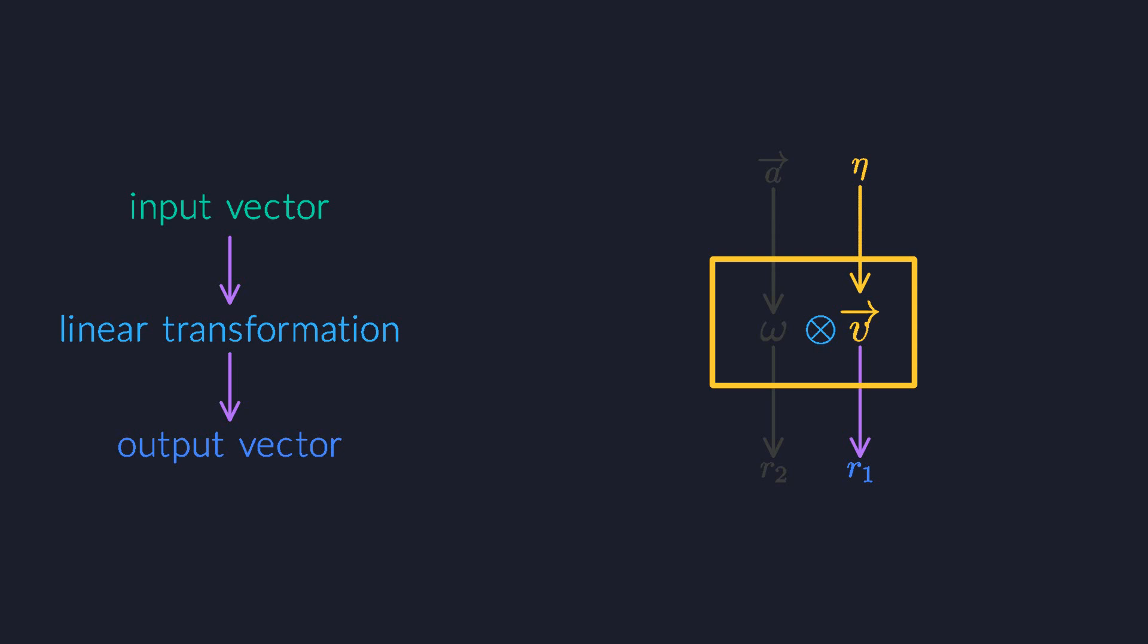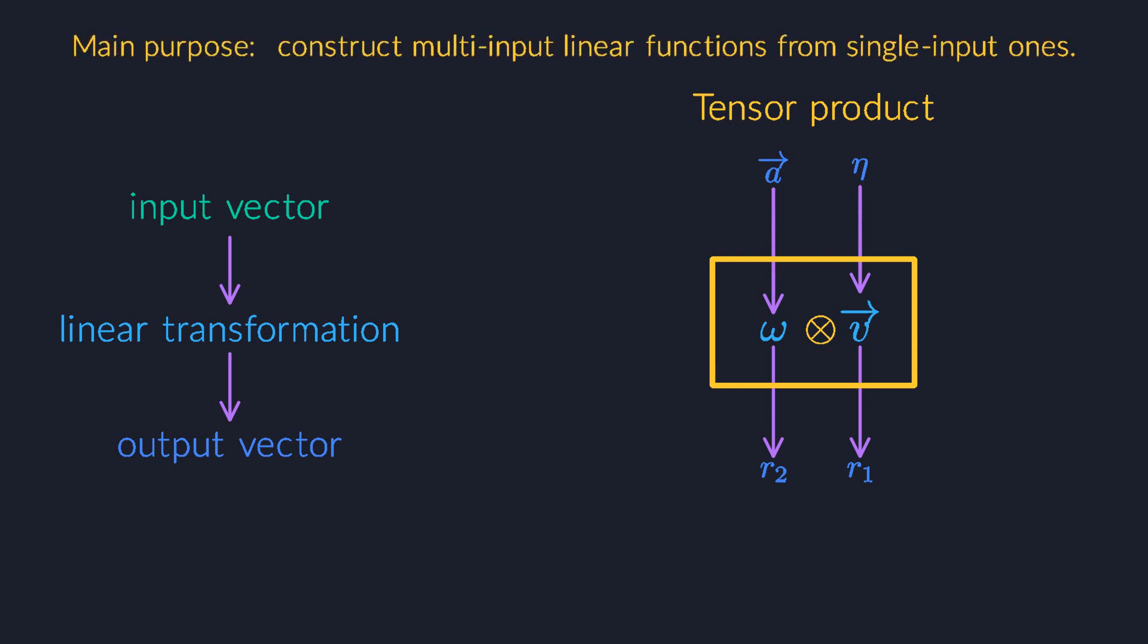So to summarize, a matrix can be seen either as a function that takes a vector and a dual vector and turns them into a real number, or as a function that takes a vector and turns it into another vector, which then takes the dual vector to produce the real number. The glue that we've been talking about is called the tensor product. Its entire goal is to produce large multi-input functions from smaller parts. The parts and the final function are all linear. And the way it works is by taking the inputs one at a time.